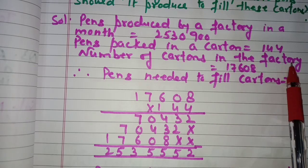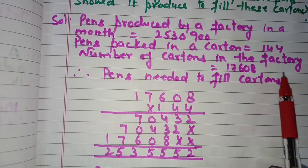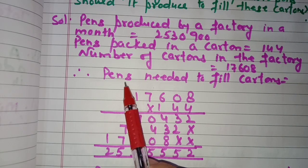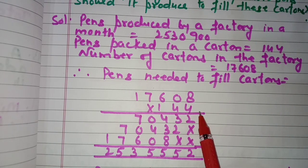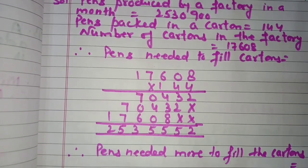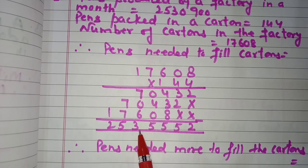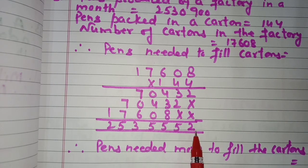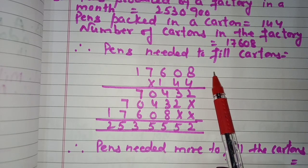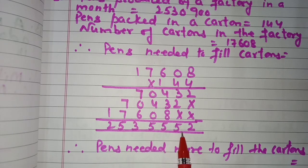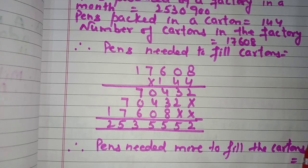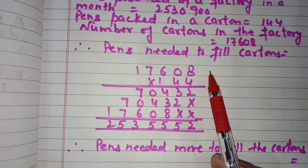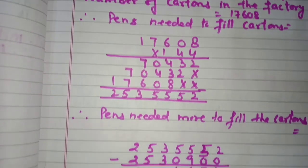To find pens needed to fill the cartons, we multiply 17,608 by 144 and get 25,35,552. To fill 17,608 cartons, we need 25,35,552 pens. But we only have 25,30,900 pens, so we need more pens to fill all the cartons.